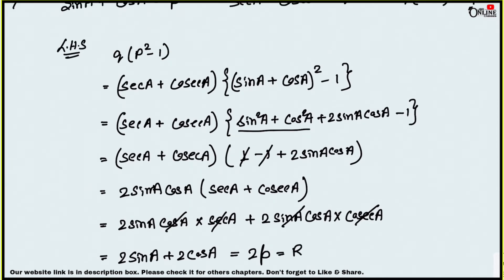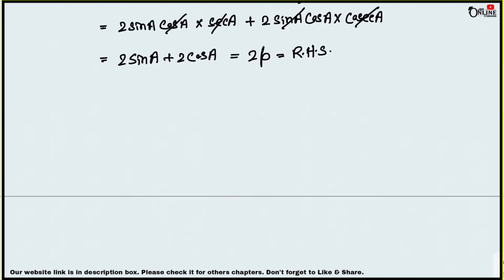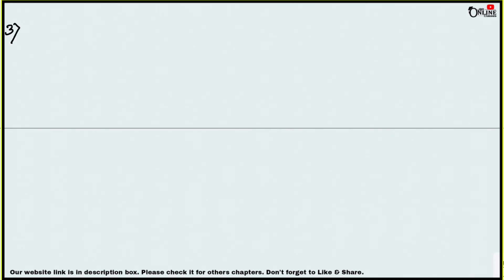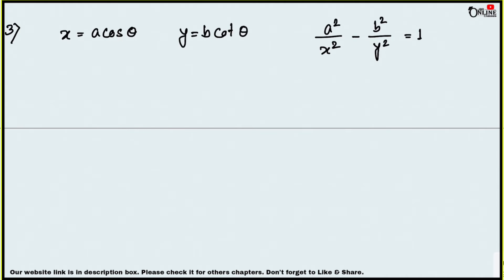That equals 2(sin a + cos a) = 2p, which equals the right-hand side. So it's proved. Moving on to sum number 3: if x = a cos θ and y = b cot θ, then show that a²/x² - b²/y² = 1.